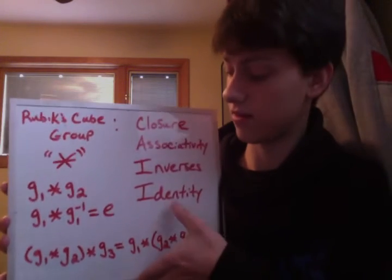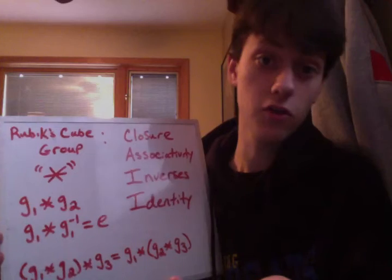This leads to our last property of groups: the existence of an identity element. For this group, I like to think of it as E. E is, as we just saw with the inverse example, the empty move — the move in which we do nothing. That exists for all elements and their inverses; combining them will yield the do-nothing move, the empty move.